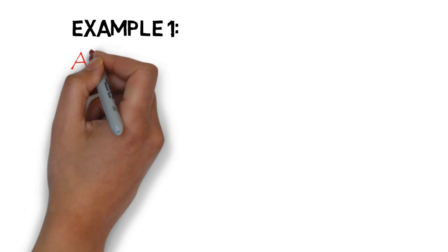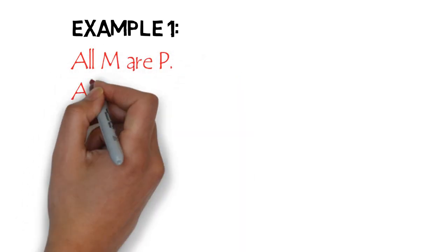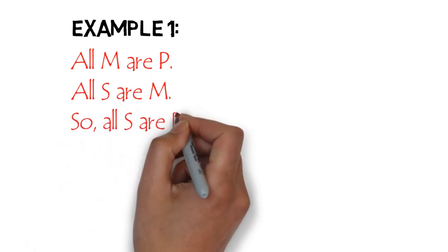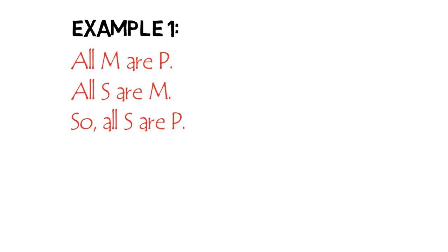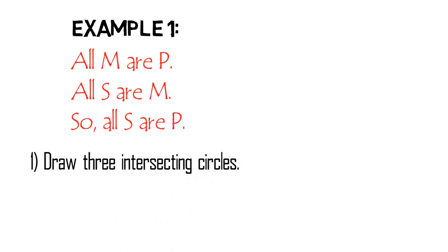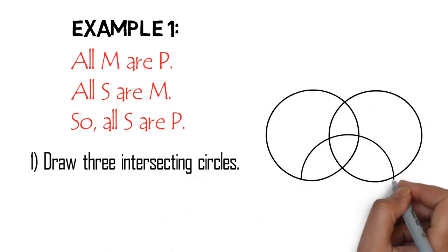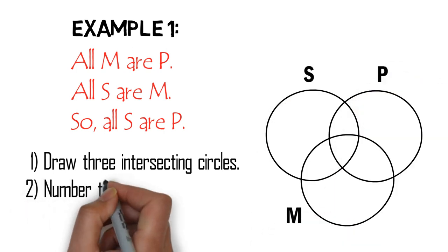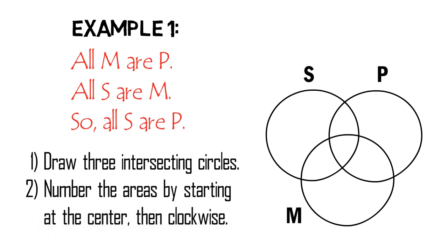Let us consider this example, which is already in its standard form: All M are P. All S are M. So, all S are P. To determine the validity of this syllogism using a Venn Diagram, we need to draw three intersecting circles — for S, P, and M — and then number the areas by starting at the center and then clockwise.